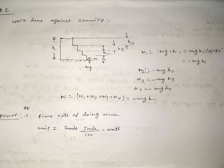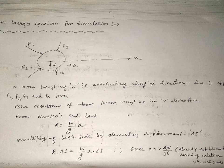Next is power. Power is the time rate of doing work — it measures how much work is done per unit second. The unit is joules per second, which is called the watt.